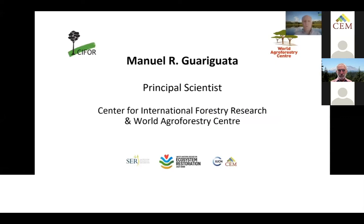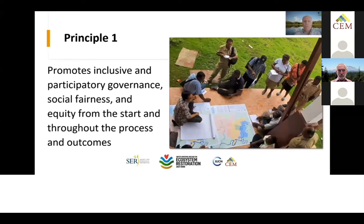Hello, I am Manuel Guariguata, principal scientist at the Center for International Forestry Research and the World Agroforestry Center. I will be presenting the first five draft principles of ecosystem restoration. Principle one: all relevant stakeholders and rights holders, with particular focus on underrepresented groups, should be identified, engaged, and integrated throughout the planning, implementation and monitoring phases. Such engagement can be achieved by securing regular access to information, seeking free prior and informed consent, building dialogue, trust and mutual respect through inclusive and transparent governance processes, enhancing tenure, property and land rights, and ensuring fair and equitable distribution of benefits based on consensus.